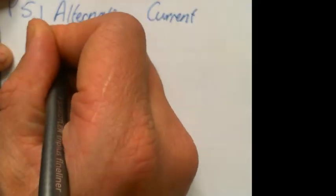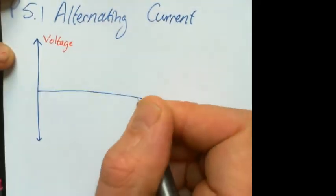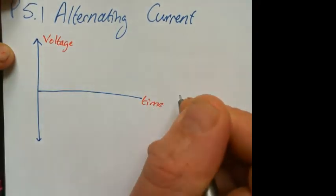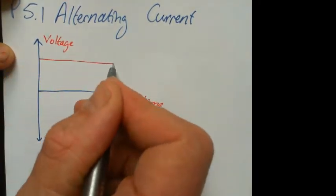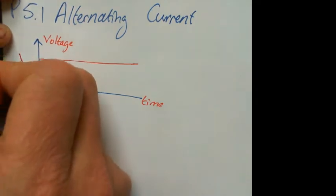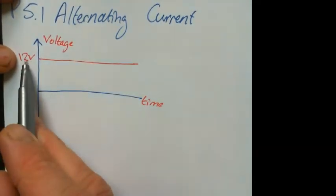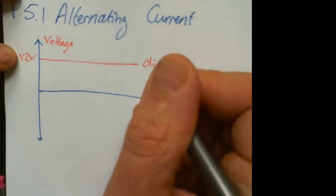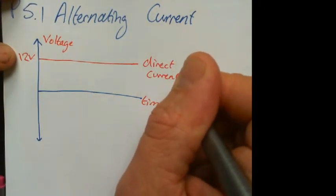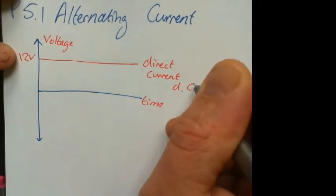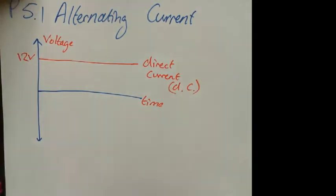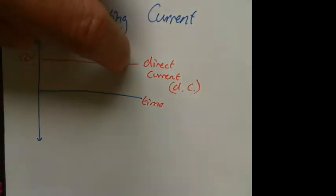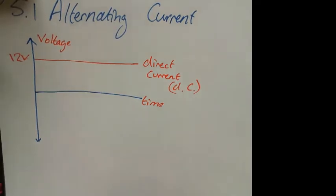If you look at how the voltage against time changes for direct current, it never changes. So if that was a 12-volt battery, for example, that would be 12 volts of direct current, otherwise known as DC. 12 volts of direct current, it doesn't change. That's the one that you used to so far, that's batteries.